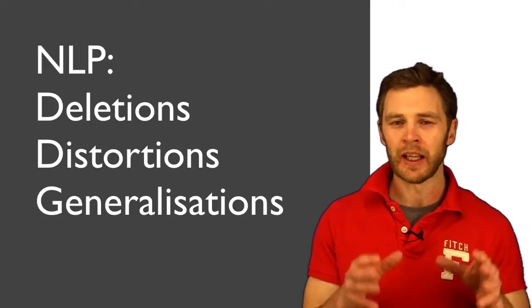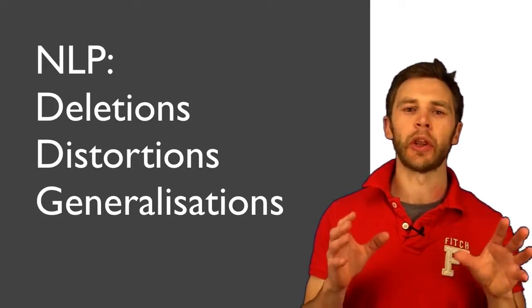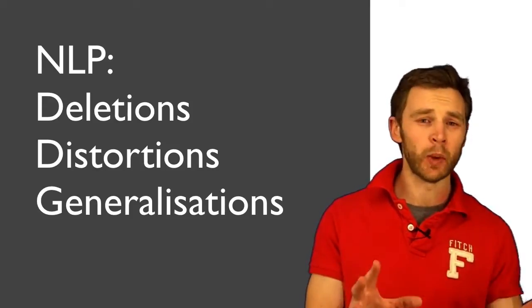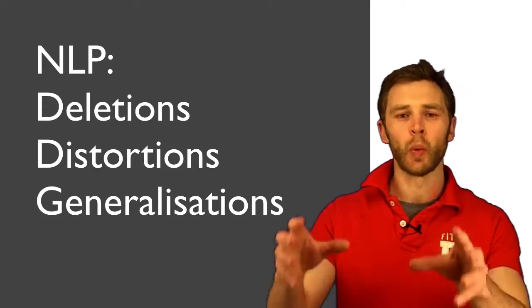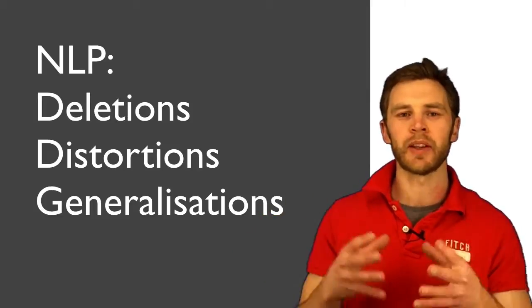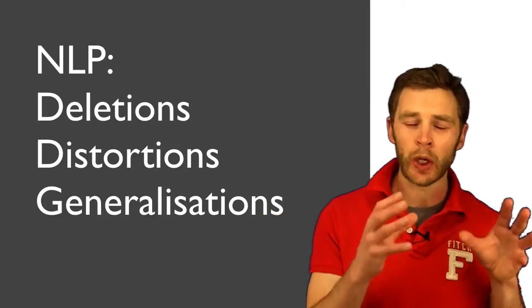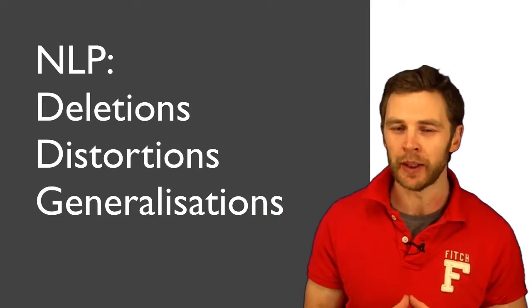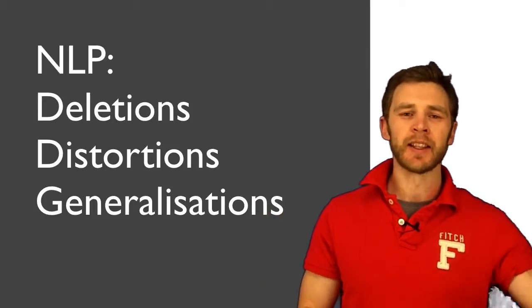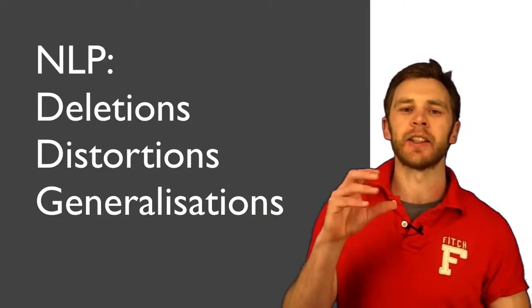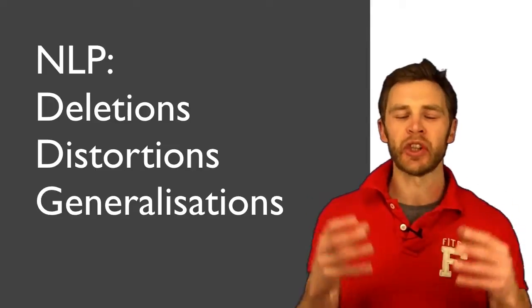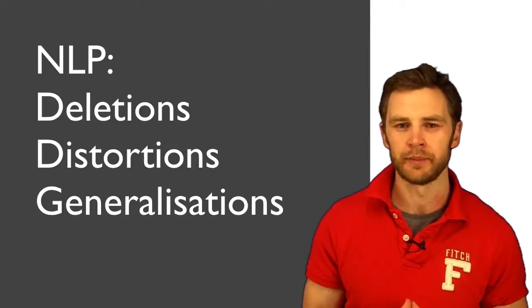Welcome to the Dreaming Sun. In this video you're going to learn the three ways we deal with the information we receive from the outside world according to NLP, and that is deleting, distorting and generalizing it.